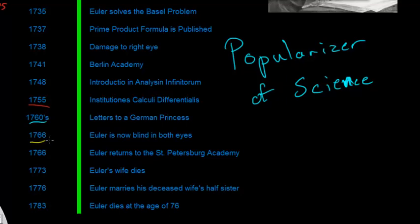And it was in 1766 that he returns to the St. Petersburg Academy, but in that same year, he becomes blind in both eyes. And you might think that that's going to stop him. But it actually made him more productive than before, believe it or not.